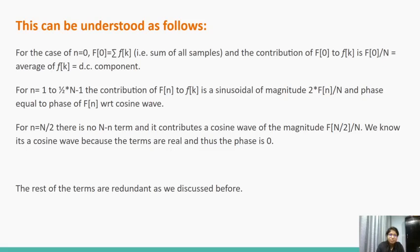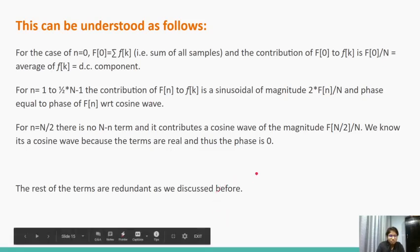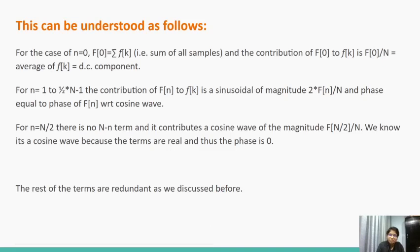All of this can be understood as follows. For the case of small n equals 0, the DFT component F[0] is equal to summation of the f[k] terms and the contribution of the n equals 0 component of DFT to f[k] is basically the average of f[k], that is the DC component. For small n equals 1 to capital N by 2 minus 1, the contribution of the DFT to f[k] is a sinusoidal of the magnitude 2 times F[n] by capital N of the phase equal to phase of F[n] with respect to a cosine wave.